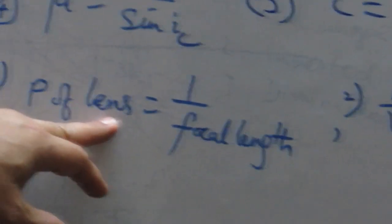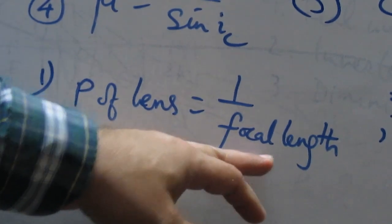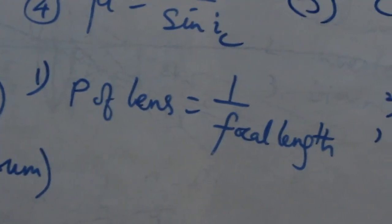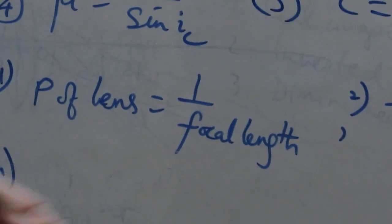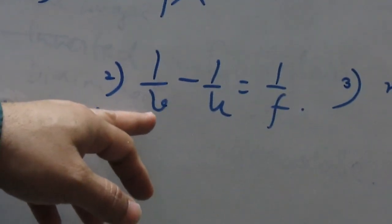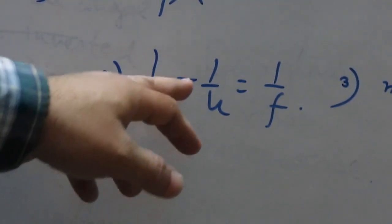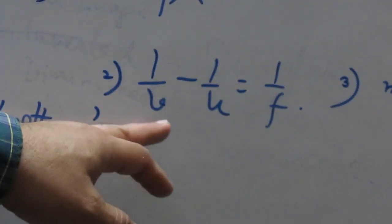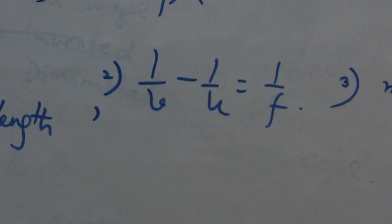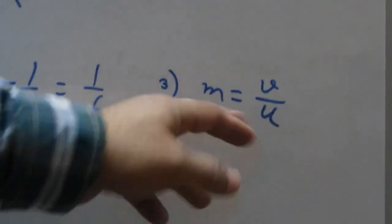Chapter 5, power of the lens: 1 by focal length. This is the formula. Here we have power in chapter 2, but power of machines and mechanical power. This is the power of the lens. So 1 by focal length, 1 by F. Now numericals, lens formula, lens equation: 1 by V minus 1 by U is equal to 1 by F. So V, what is image distance? U, what is object distance? F, focal length of the lens. Then magnification, so V by U.